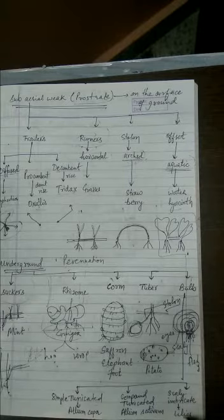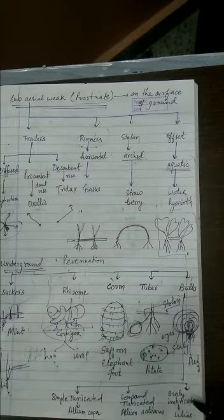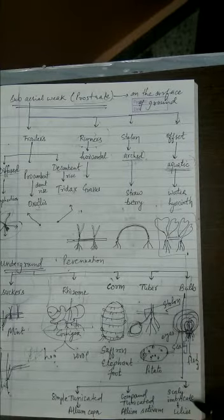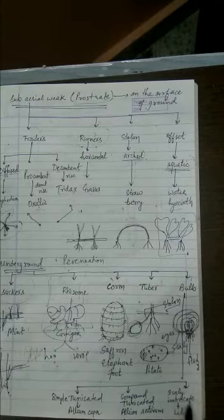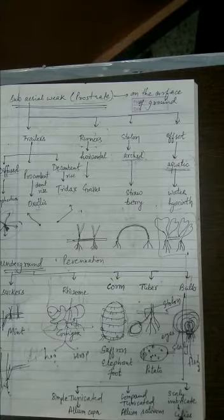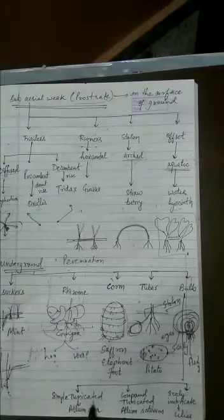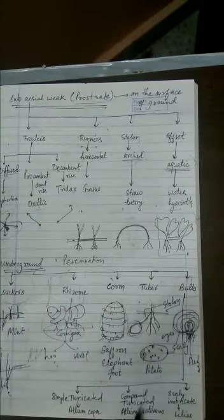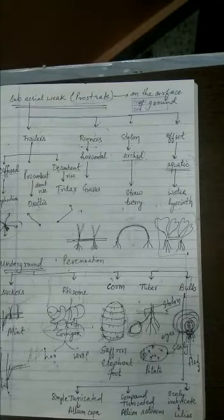And when we talk about lilies and all, all lilies are scaly imbricate type of bulb. So three types of bulbs are there. Or you can say two types are there. First is tunicate. Second is scaly imbricate. And tunicate again of two types, simple and compound.